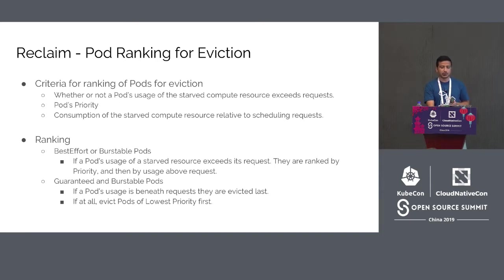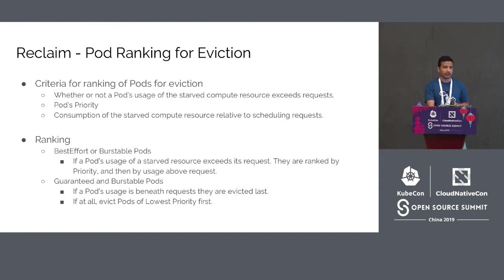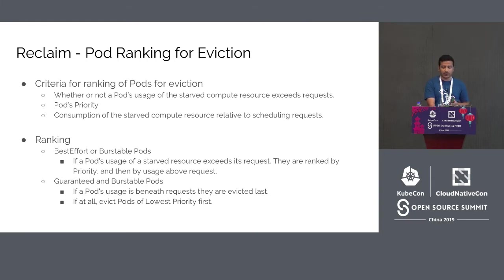When Kubelet is unable to reclaim sufficient resources, it begins evicting pods by preparing a ranked list. Ranking is performed based on pods' quality of service, priority, and resource usage. The criteria are: first, whether their usage of the starved resource exceeds their requests; second, by pod priority as defined during deployment; and third, by consumption of the starved resource relative to the pod's scheduling request — higher consumption means higher chances of eviction. Best effort or burstable pods whose usage exceeds their request are ranked further by priority and usage above their request. Guaranteed and burstable pods whose usage is beneath the request are evicted last, only when necessary to maintain node stability, based on lowest priority first.